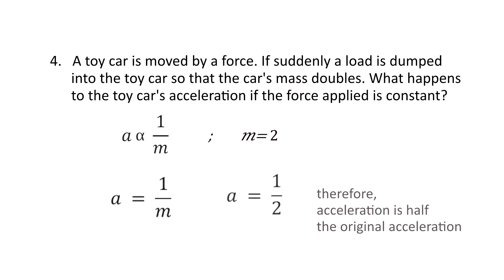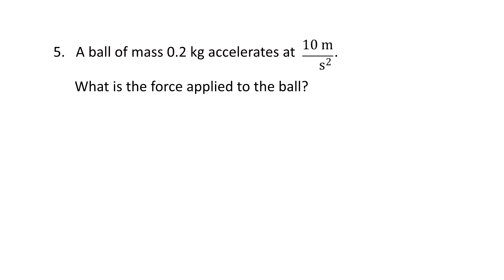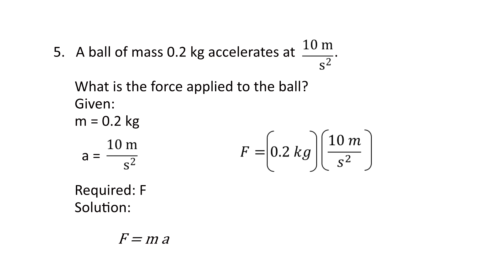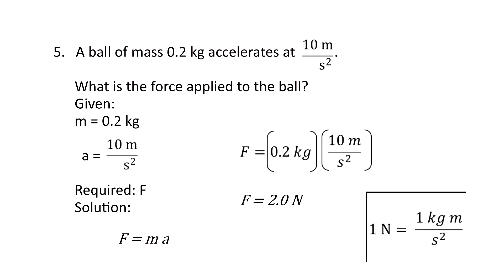For number 5, a ball of mass 0.2 kilogram accelerates at 10 meters per second squared. What is the force applied to the ball? The given: mass equals 0.2 kg, acceleration equals 10 m/s². The equation is: force equals mass times acceleration. Substituting: 0.2 kg × 10 m/s² equals 2. Since 1 Newton equals 1 kg·m/s², the force equals 2 Newtons. I hope you learned how to solve problems using the law of acceleration.